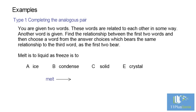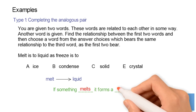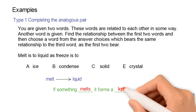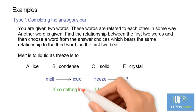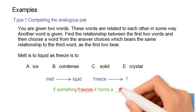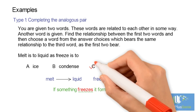We first look for the relationship between melt and liquid. We can say that if something melts, it forms a liquid. The second word, liquid, is the result of the first word, melt. We apply this same relationship to the third word. If something freezes, it forms a solid. The correct answer is C.